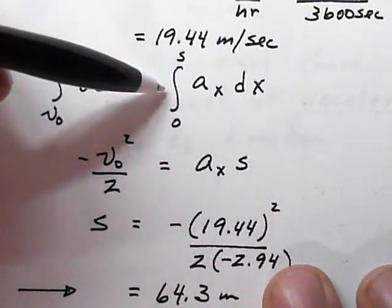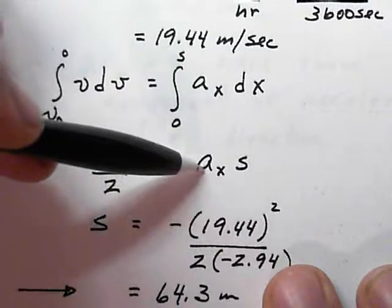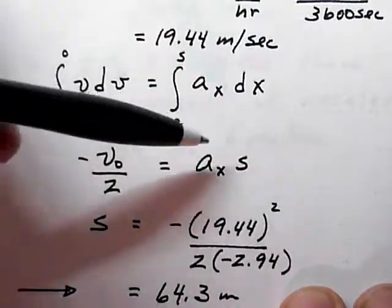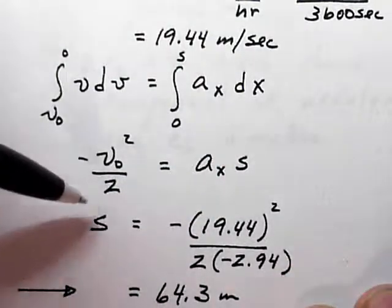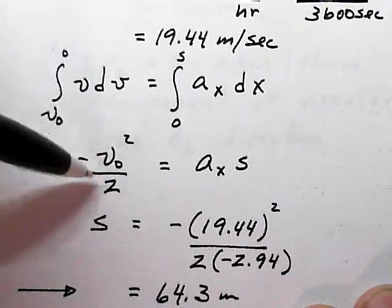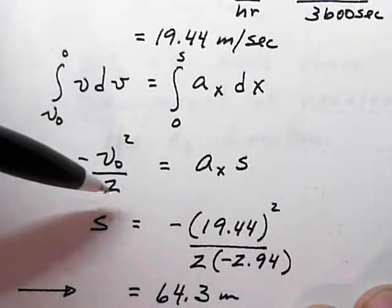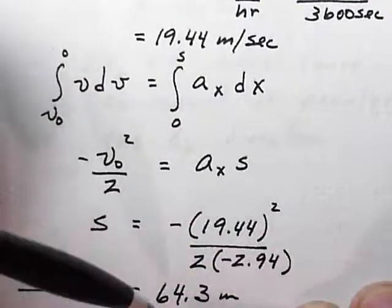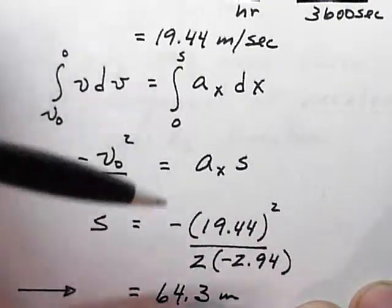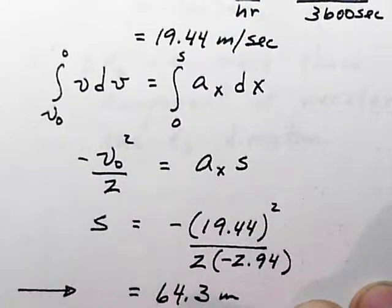Solving for s with a negative in front of the velocity and a negative acceleration gives a positive stopping distance as we would expect of 64.3 meters.